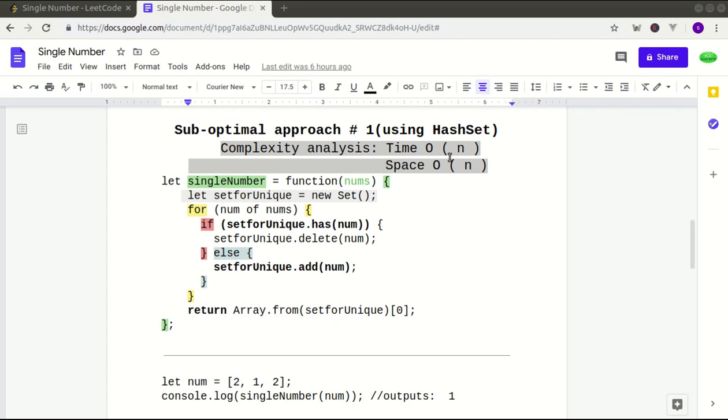And the next approach, which is optimal, it will not be using this space. So therefore, that is optimized because the space would be O(1) constant time in the next approach, which is using bit manipulation.